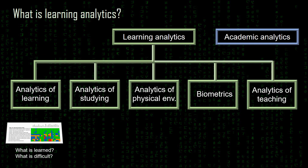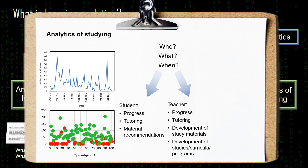Next is analytics of studying, which is something most learning management systems do. They gather data — the footprint — about who did what and when, and this is then visualized using different kinds of graphs. For the student this shows how he or she is progressing in the course. For the teacher, it's a tool to find students who have difficulties in learning, a tool for intervention and tutoring, but also to see how materials are used — and as such it's a tool for developing those materials or the whole curricula and degree programs.